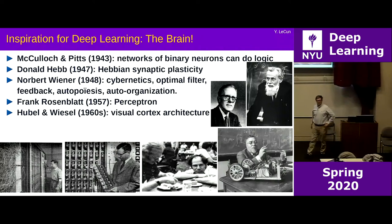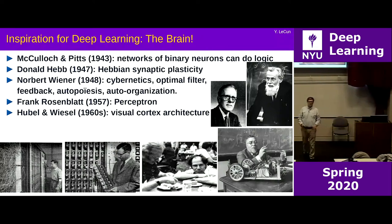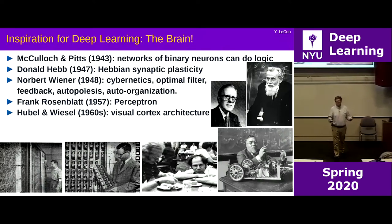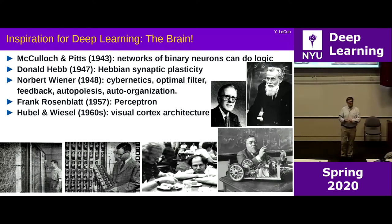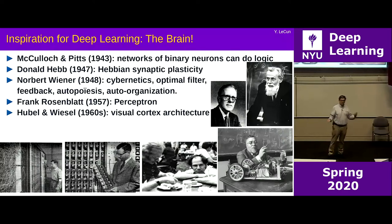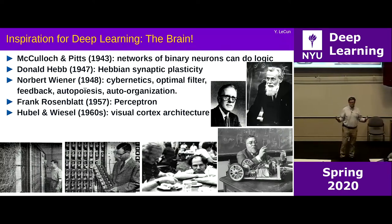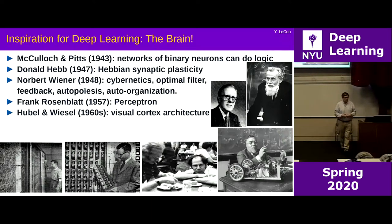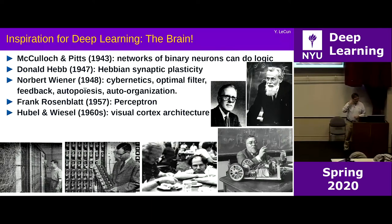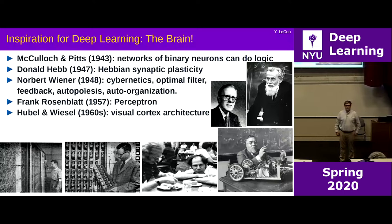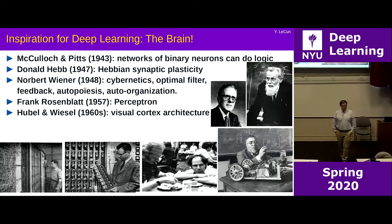Deep learning is inspired by what people have observed about the brain, but the inspiration is just an inspiration — it's not an attempt to copy the brain, because there are a lot of details about the brain that may be irrelevant to human intelligence. The inspiration is at a conceptual level — a bit like airplanes being inspired by birds. The underlying principles of flight are essentially the same, but the details are extremely different: airplanes don't have feathers and don't flap their wings.